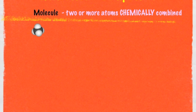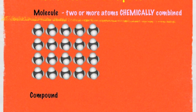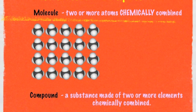What's the relationship between a molecule and a compound? If that's a molecule, then the compound is this. The relationship we saw between atoms and elements is the same exact relationship we see between molecules and compounds. One definition of a compound is a substance made up of two or more elements chemically combined. Two or more atoms chemically combined is a molecule; two or more elements chemically combined is a compound.